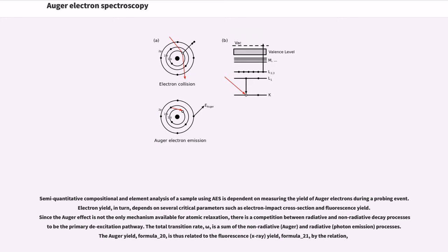Semi-quantitative compositional and element analysis of a sample using AES is dependent on measuring the yield of Auger electrons during a probing event. Electron yield, in turn, depends on several critical parameters such as electron impact cross-section and fluorescence yield. Since the Auger effect is not the only mechanism available for atomic relaxation, there is a competition between radiative and non-radiative decay processes to be the primary de-excitation pathway. The total transition rate, omega, is the sum of the non-radiative (Auger) and radiative (photon emission) processes.